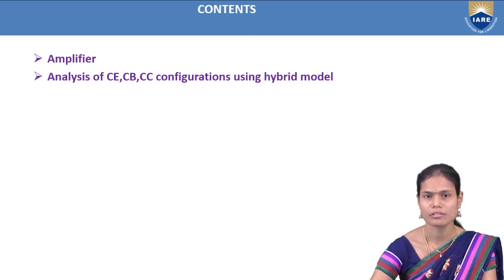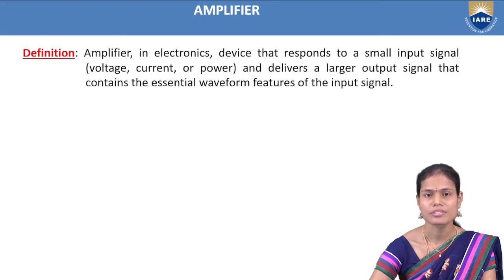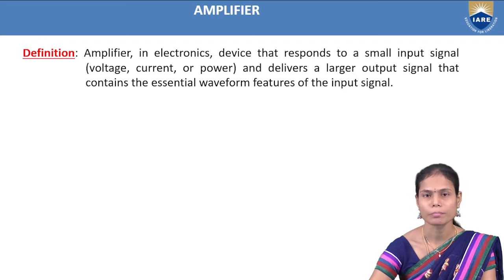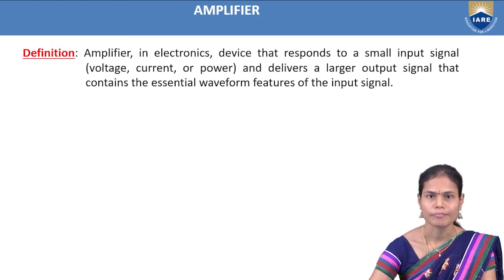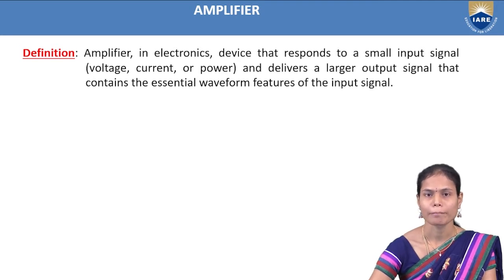Before going to the analysis of all the amplifiers, first of all we have to know what is meant by amplifier. In general terms, an amplifier is a circuit used to amplify the given signal. When we apply a weak signal to the input, across the output we get an amplified version of that weak AC signal. It is a device that responds to a small applied input signal — voltage, current, or power — and gives a larger output signal containing the essential waveform features of the applied input.